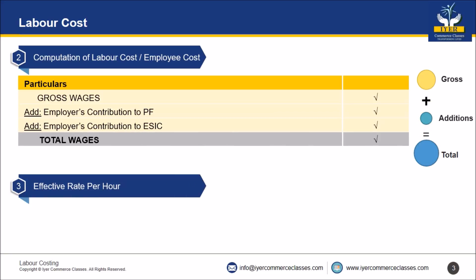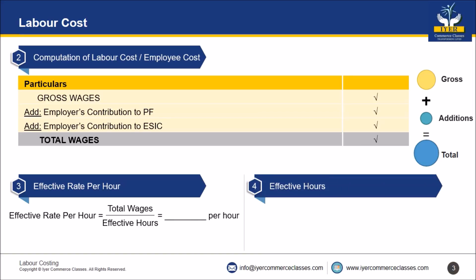Third: effective rate per hour. The question will ask you to calculate the rate per hour. Formula: total wages (or total labor cost) divided by effective hours gives you the rate per hour. To calculate effective hours, use: total hours minus normal idle hours, which gives you effective hours.